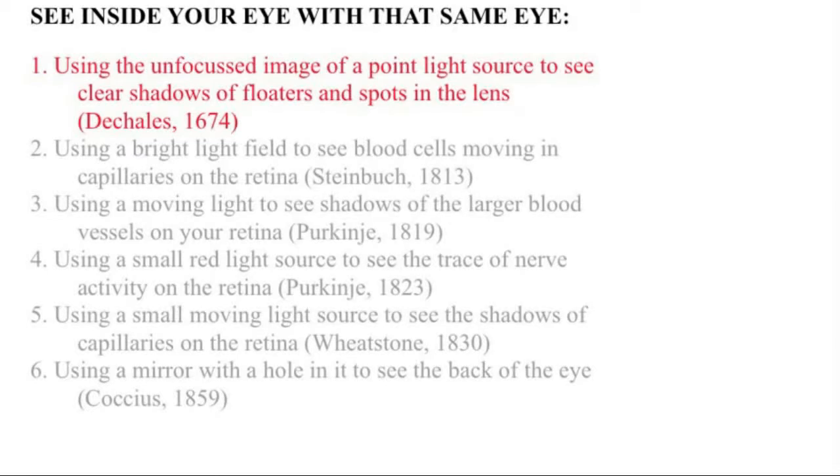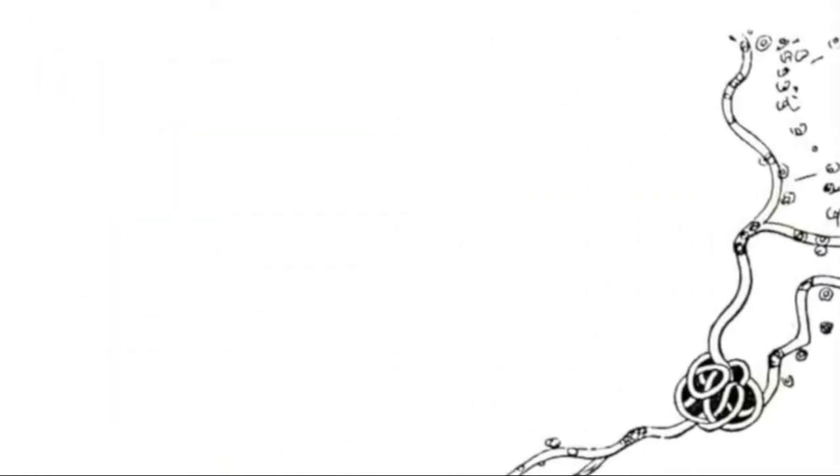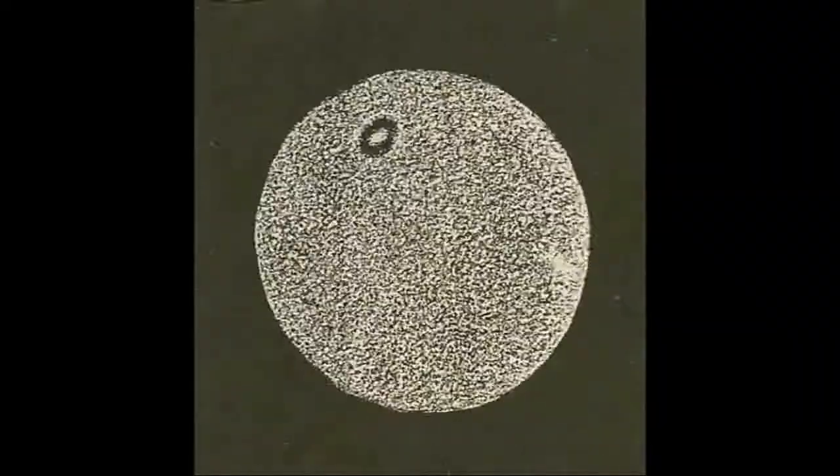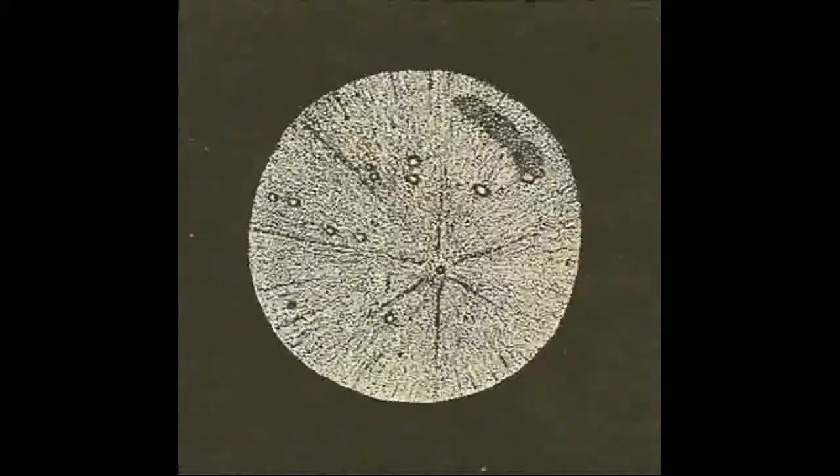The oldest technique involves using a point light source to see clear shadows of floaters in your eye and any spots you might have in the lens of your eye. In this video, Blaine and I will attempt to demonstrate a number of ways to do this while reviewing the history and explaining some of the science.